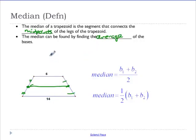The median can be found by finding the average of the bases. So, the median is halfway between, so 6 plus 14, divided by 2, we get 10. So, the median of this one is 10.